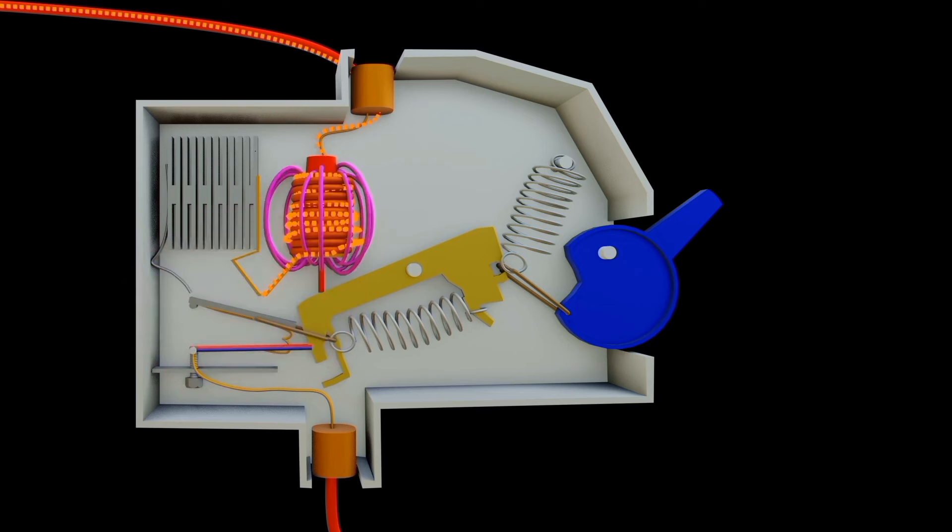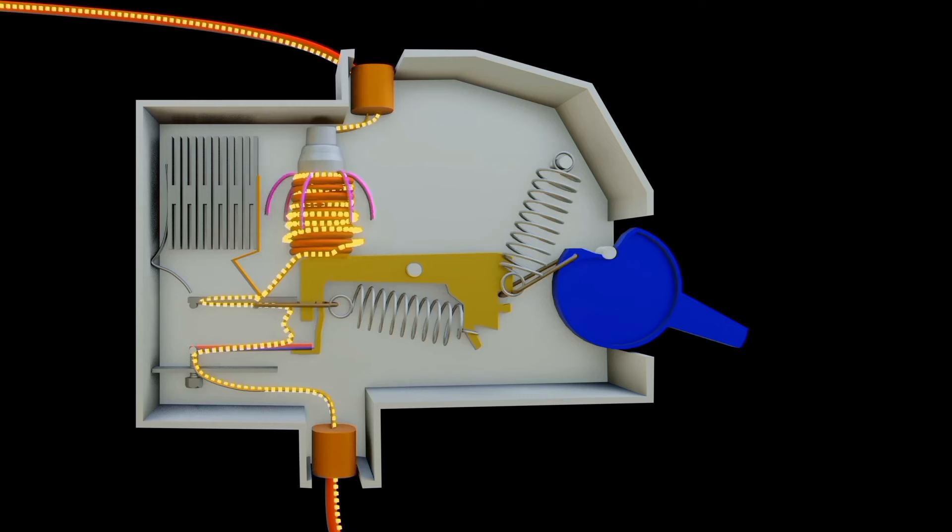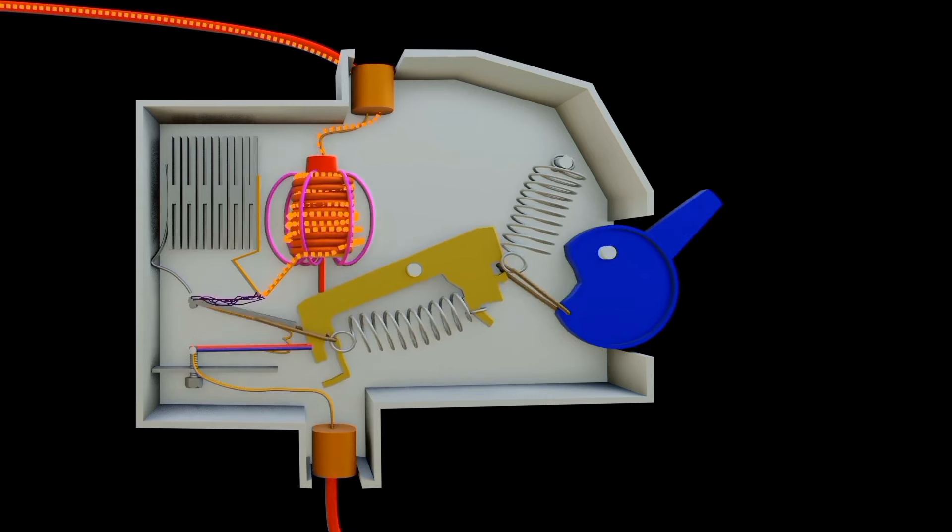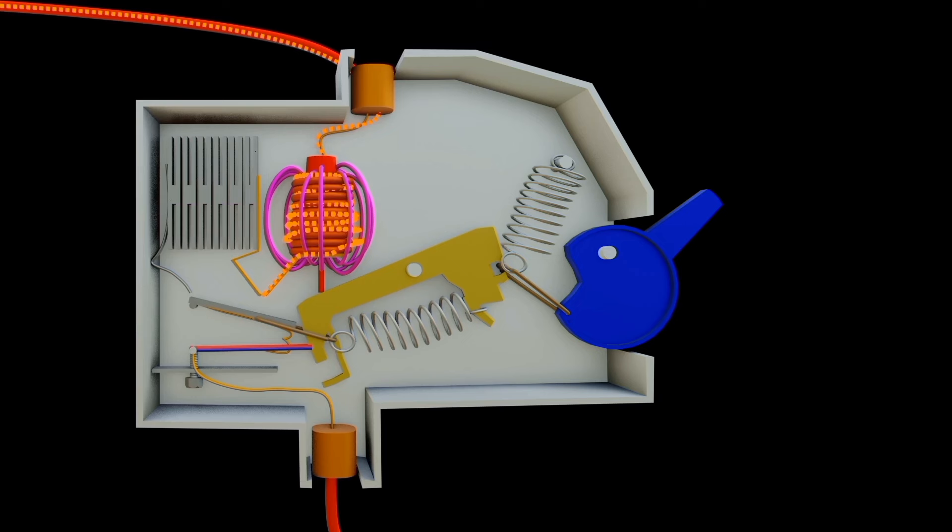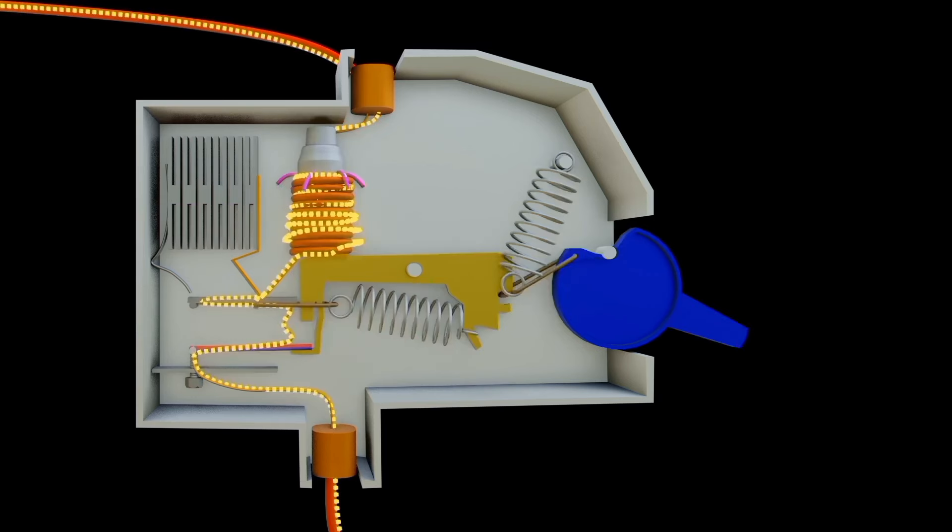As the contacts open, an electrical arc forms between the moving contact and the fixed contact. This is due to ionization of air in the gap created. This arc sustains the flow of current. Arc chamber then contains arc chutes which are designed to quickly redirect the arc into the arc chamber. This helps in controlling and containing the arc within a confined space.